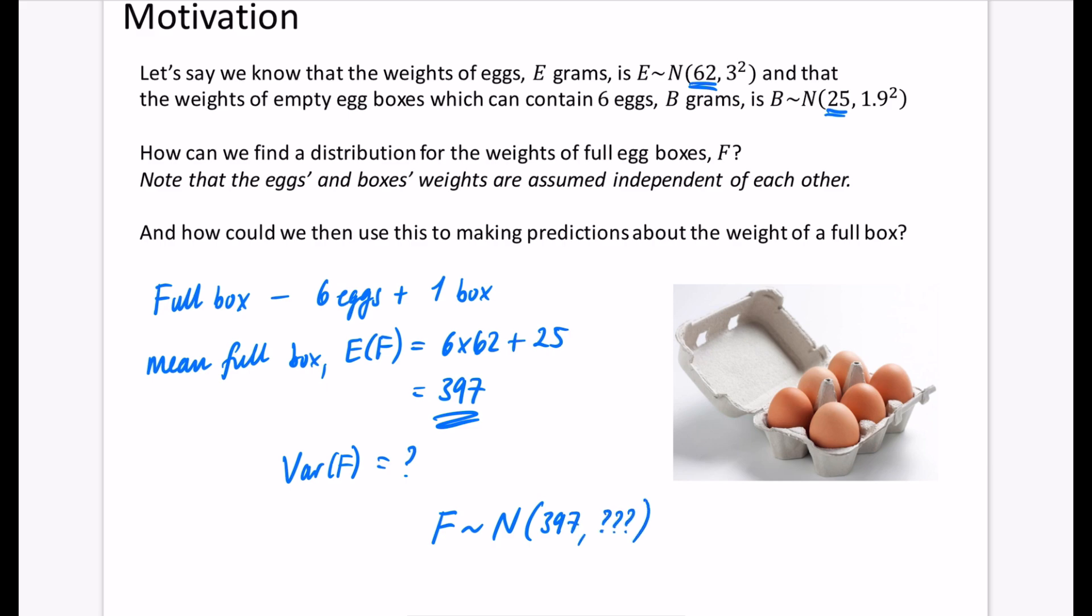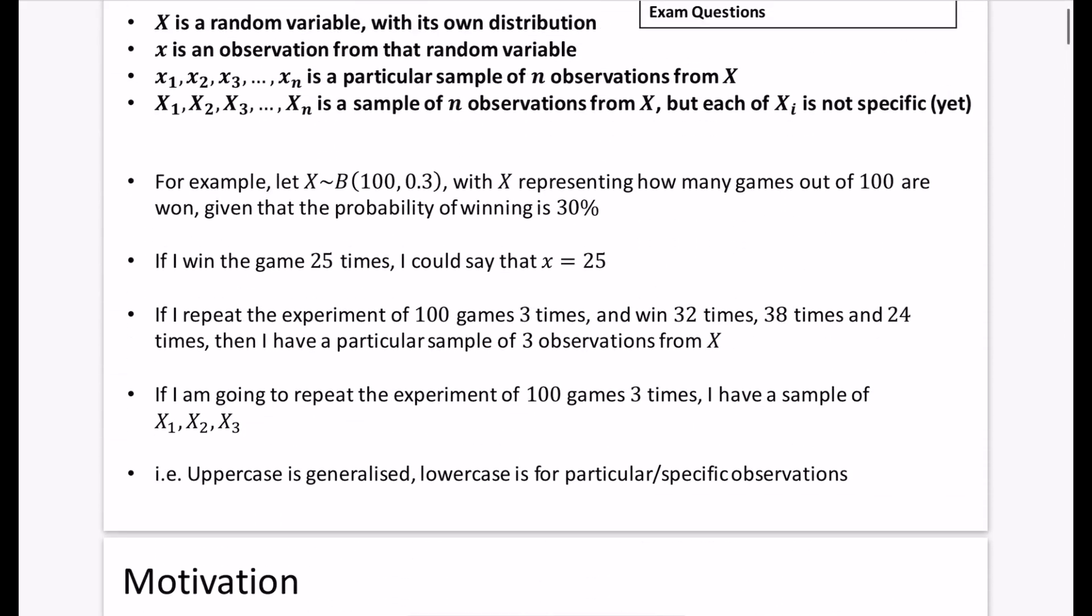But later on, we'll work out how we can do the variance of this. And once you've got that normal distribution, then you can use this to make all sorts of predictions, like what's the probability that a full box is going to be more than 400 grams, for example. So that's kind of why we're trying to do this whole topic.